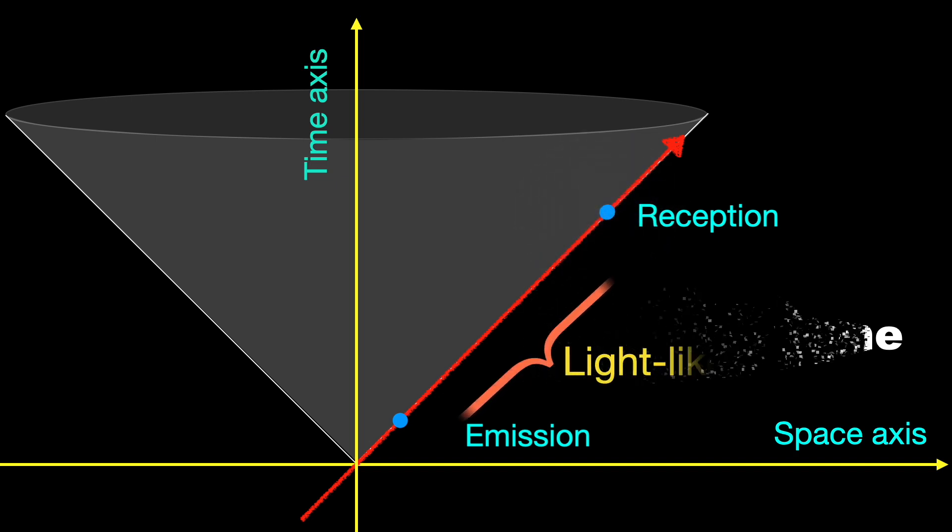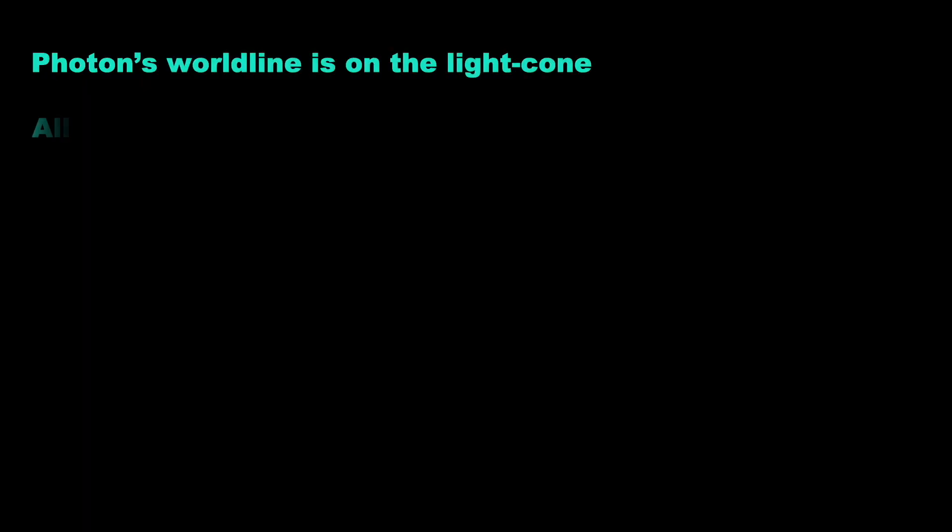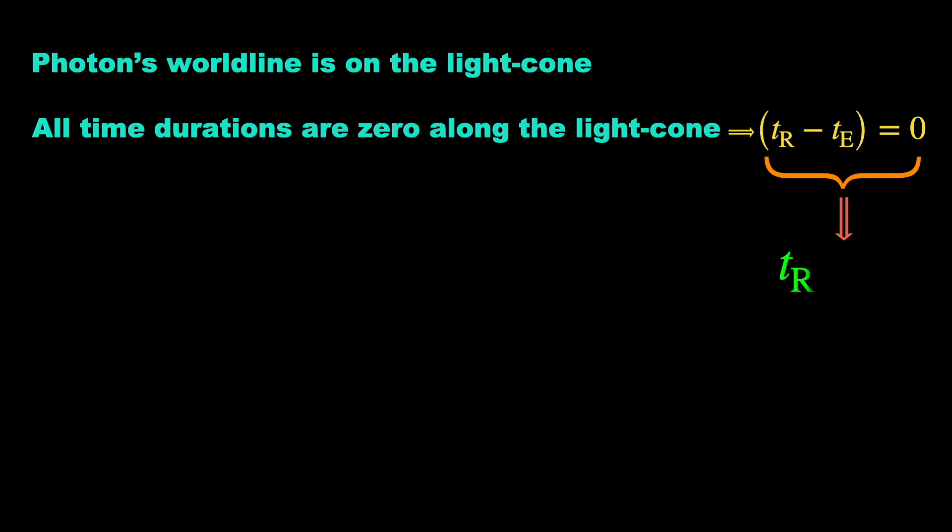Why zero is explained in a video on types of space-time interval I made long back. Thus, for a photon, any emission-reception event pair occur at the same time and at the same place.